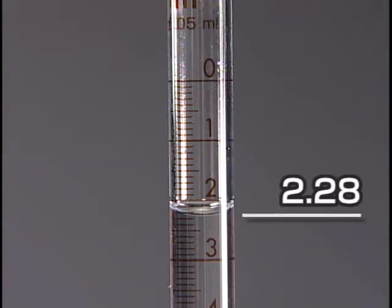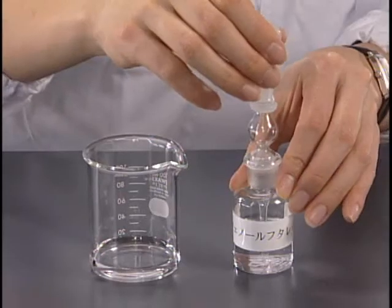There is no need to adjust the meniscus of the solution to zero. Move your eyes to the level of the liquid surface and read the value of the bottom of the meniscus with one tenth of the smallest scale marked on the burette.